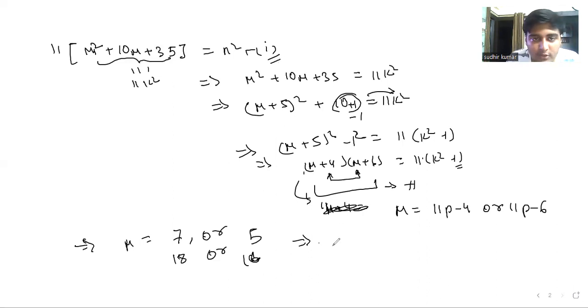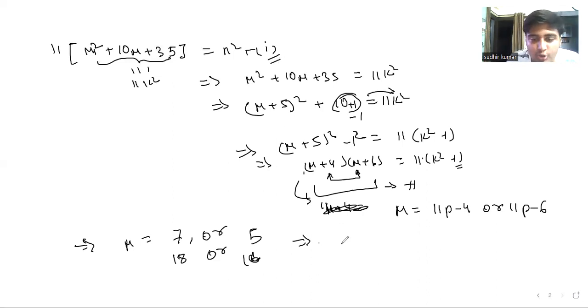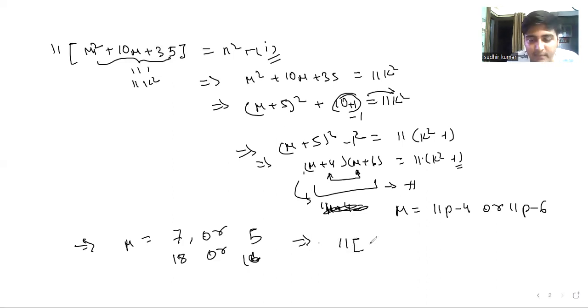Substituting these values into our equation to check which gives a perfect square: for m=5 we compute 11·(5²+50+35), which is not a perfect square.